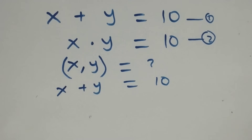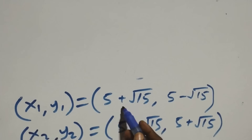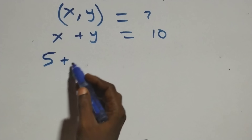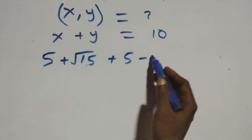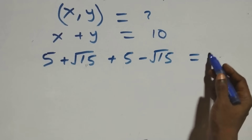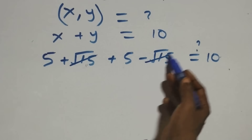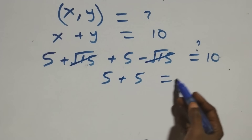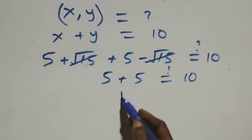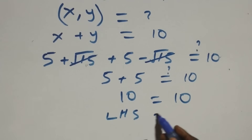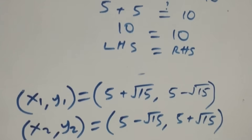Using the first solution, x is 5 plus √15 and y is 5 minus √15. So we have (5 plus √15) plus (5 minus √15). The root 15 terms cancel each other and we are left with 5 plus 5, which equals 10. The left hand side equals the right hand side, so the first solution satisfies equation one — and the second solution will also satisfy it.